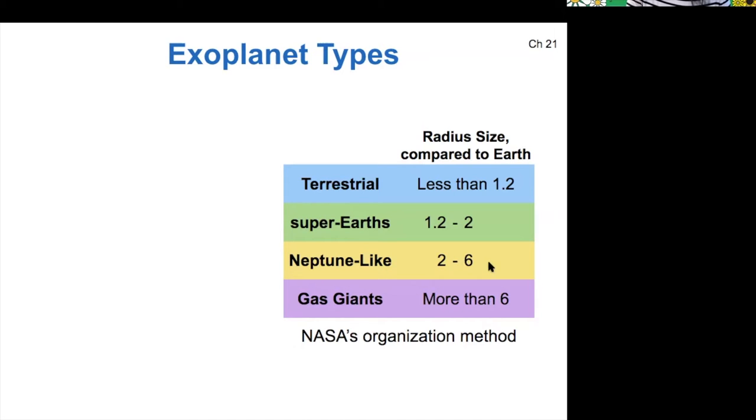Neptune-like planets are between 2 and 6 Earth radii, and then gas giants are more than 6.